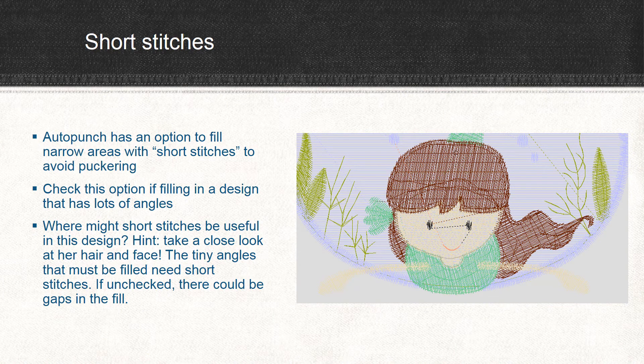Short stitches are very important when you're digitizing in small areas. Auto Punch has an option to fill narrow spaces with short stitches, which helps avoid puckering and gaps. When digitizing a design like this little mermaid, check this option if there are lots of angles and tiny spaces. The ends of her hair right where it curls, and around the hairline in her face, are places where short stitches come in handy. Short stitches help to fill a tiny area and stitch closer to the outline stitch or the edge of a design.